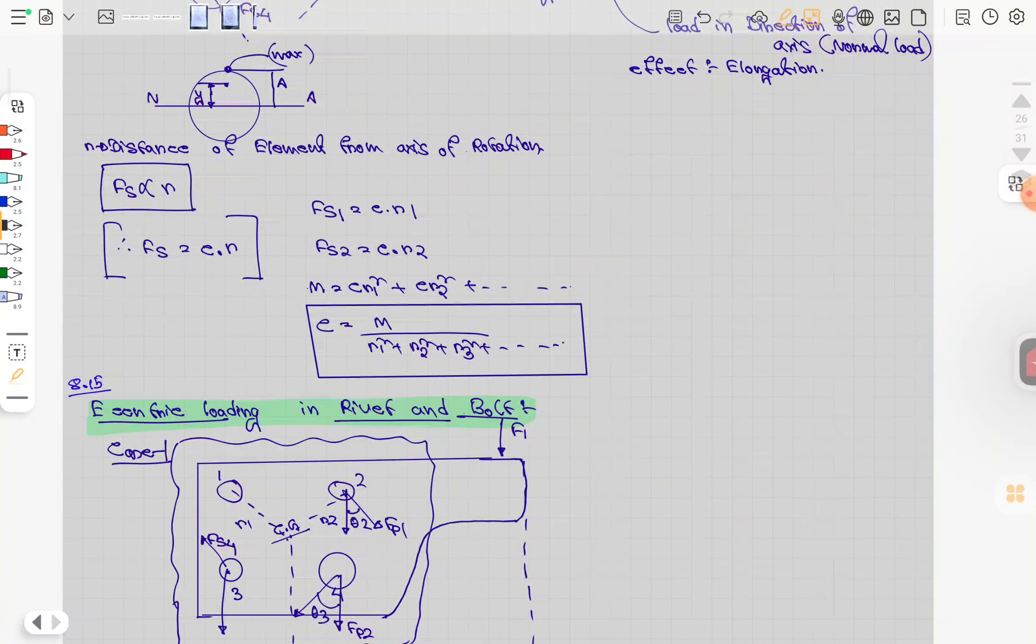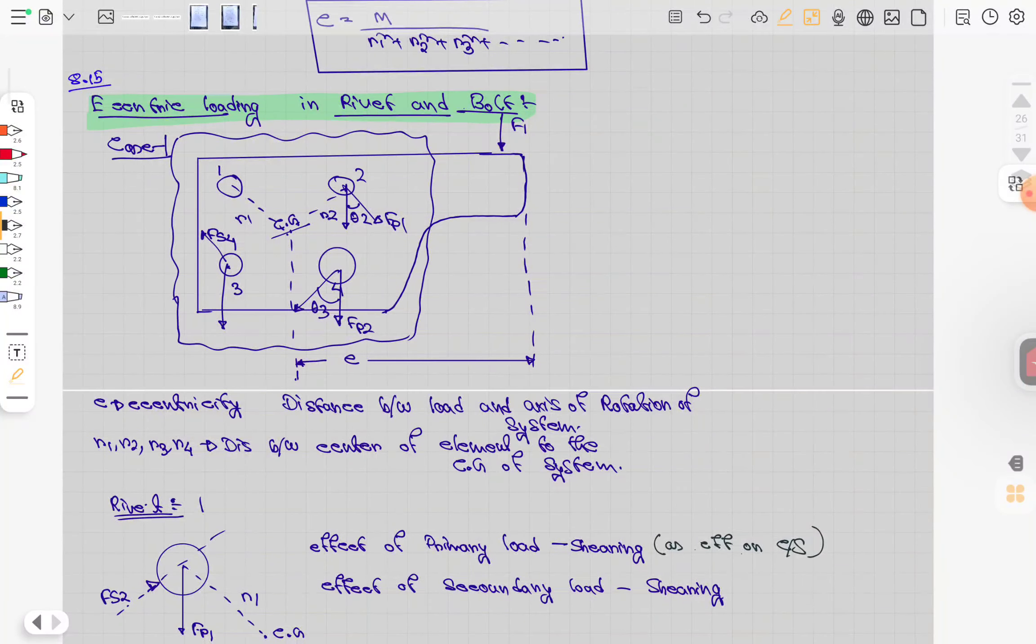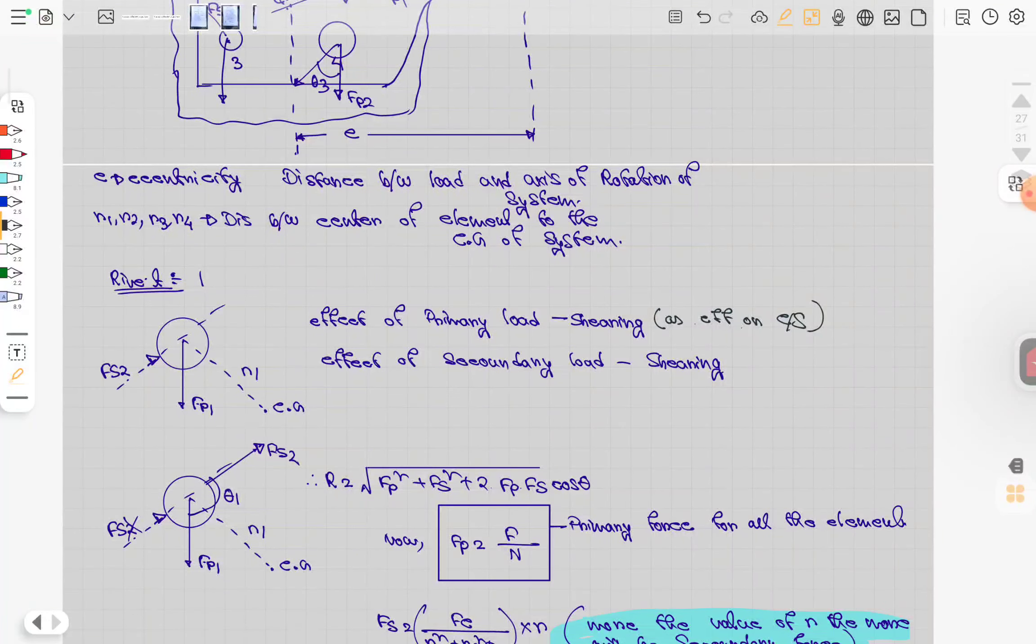The eccentricity c equals e times eccentricity equals m divided by (r1 plus r2). In centric loading, there's an angle between the primary and secondary loads. The eccentricity is the distance between the center element and the CG.